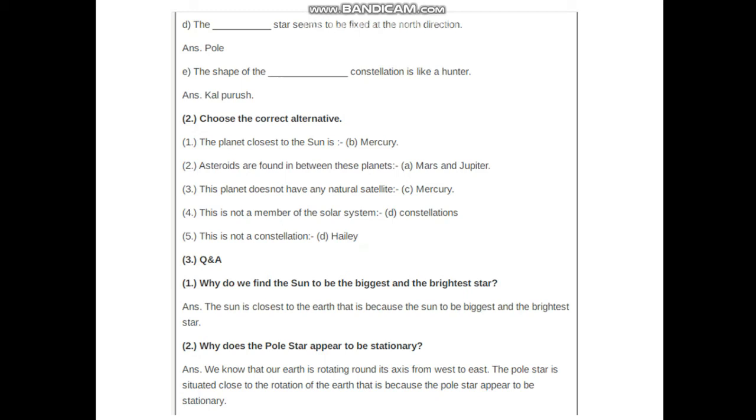Question and answer: Why do we find the sun to be the biggest and the brightest star? The sun is closest to the earth. That is because the sun is the biggest and brightest star. Why does the pole star appear to be stationary? We know that our star is rotating around its axis from west to east. The pole star is situated close to the rotation of the earth. That is because the pole star appears to be stationary.